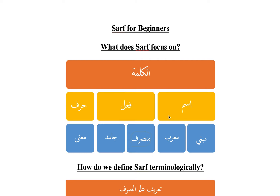Now, in ilm al-sarf, what we focus on is al-fi'l al-mutasarrif and al-ism al-mu'rab. In sarf, we do not focus on the mabni, we do not focus on the jamid, and we do not focus on the harf ma'na. We only focus on the ism al-mu'rab and the fi'l al-mutasarrif.